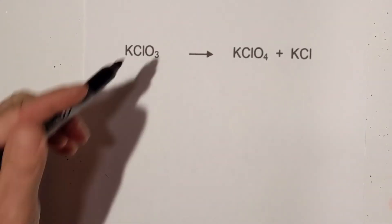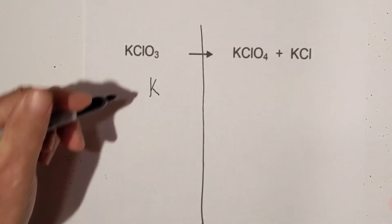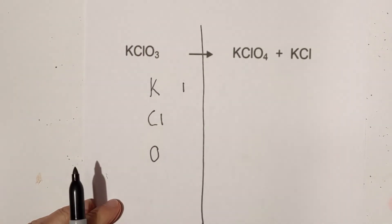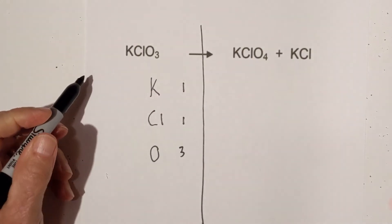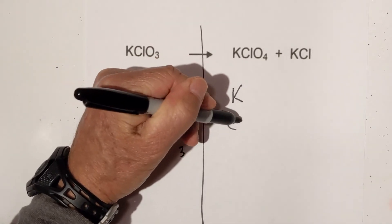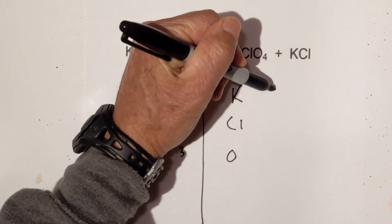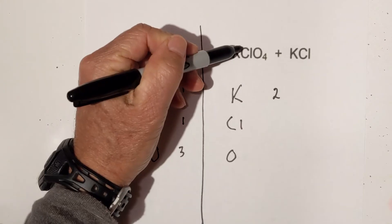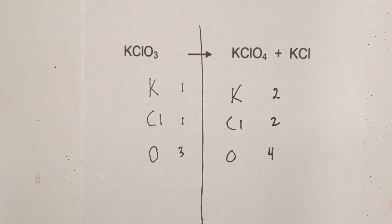Let's try one final one. Draw a line down and separate the elements out. Let's count: we have one potassium, one chlorine, three oxygens. On the other side we have potassium, chlorine, and oxygen. We have two potassium, so I'm going to write a two there. We have one chlorine here and one there, so we have two of those. And then we have four oxygens.